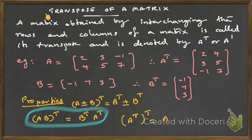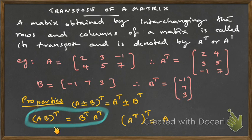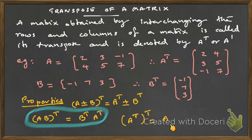Quick summary of what we learned: transpose means taking each row and writing as the corresponding column. Properties: transpose is distributive over addition and subtraction — (A + B)^T = A^T + B^T. For multiplication, (AB)^T = B^T A^T. And (A^T)^T = A.